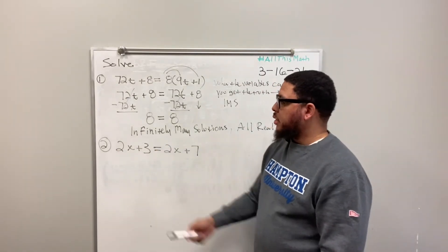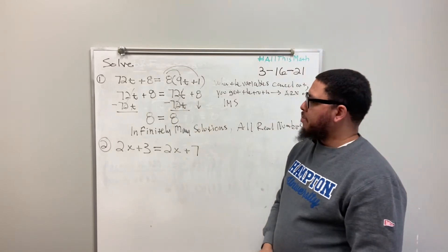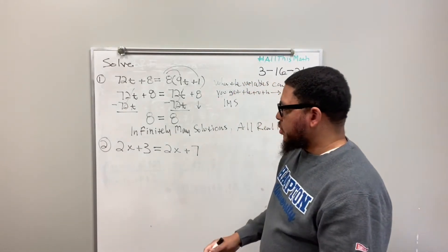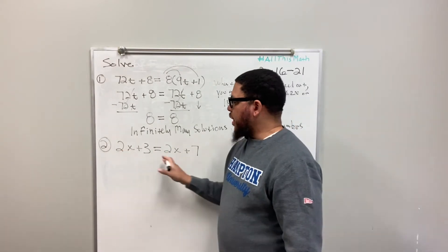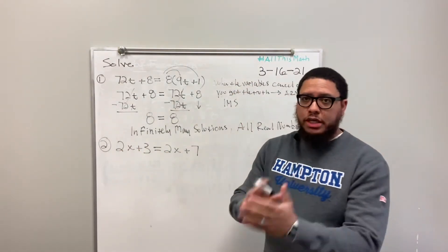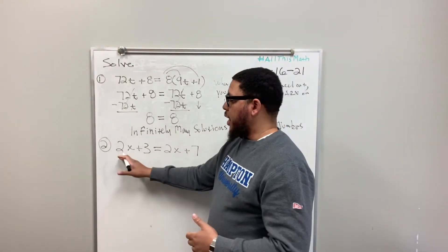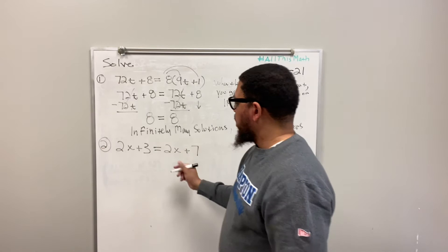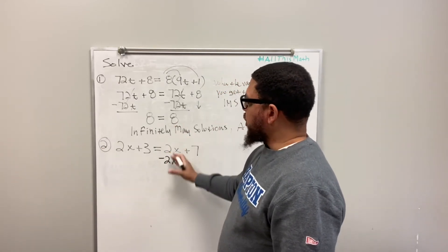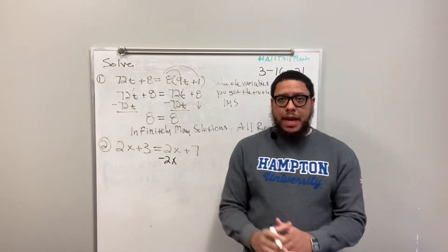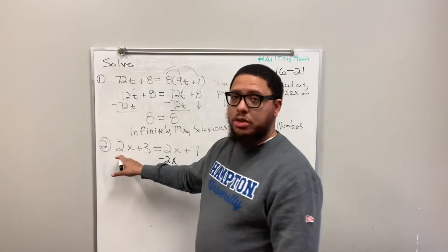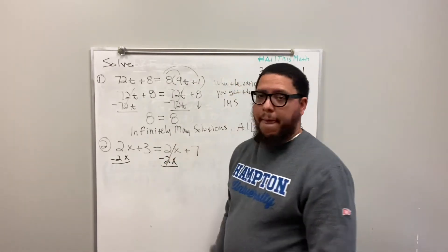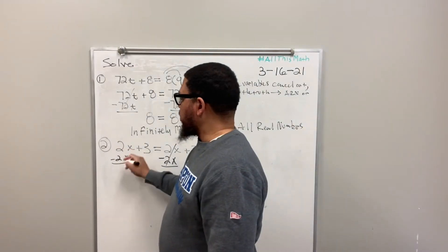Let's look at number 2. Number 2 says 2x plus 3 equals 2x plus 7. Again, another special solution. I don't have any parentheses, so I don't have to worry about that. But I do have x's on each side of the equal sign. I want x on one side of the equation — I like to have my x's on the left side. So I'm going to get rid of this 2x by doing minus 2x on the right. And because we're all about maintaining balance, I also subtract 2x on the left side. 2x minus 2x is 0, and again 2x minus 2x is 0.